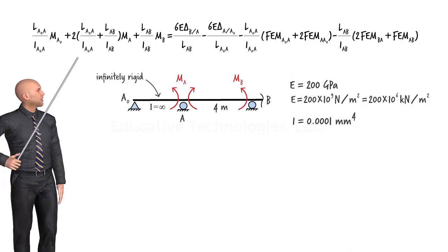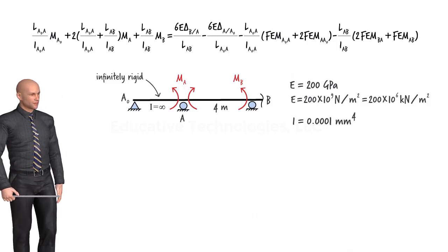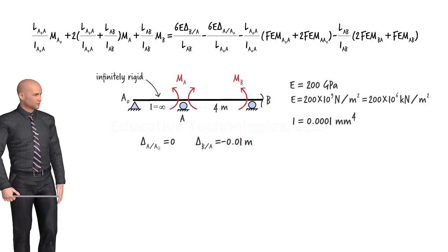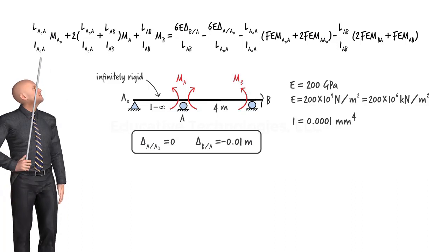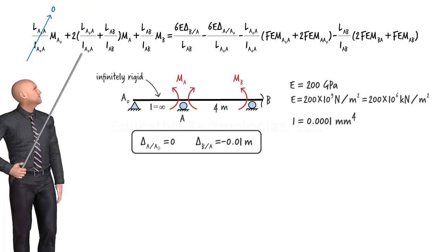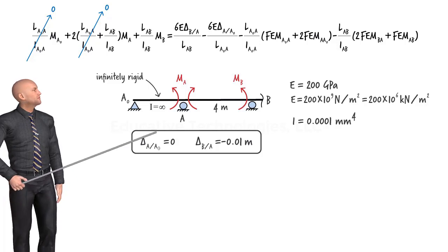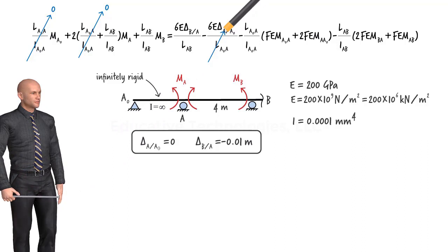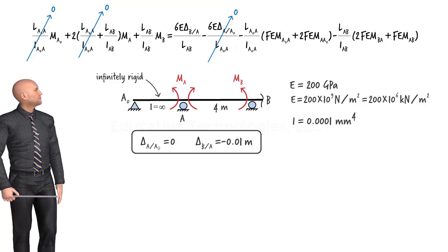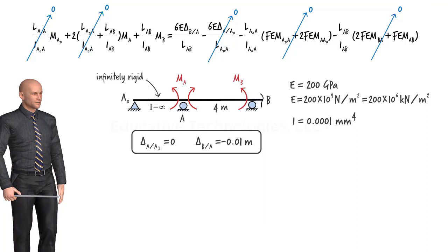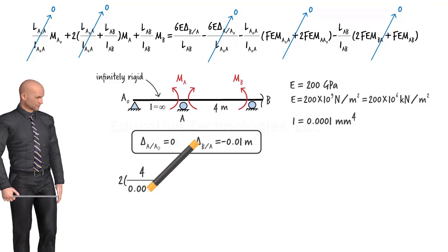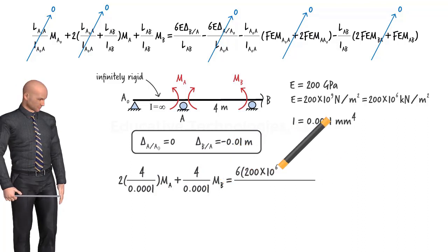For the first two spans, the relative vertical displacement for the left segment is zero, and for the right segment it is negative 0.01 meter. Since the moment of inertia for the left beam segment is infinity, certain terms vanish. Also, since neither segment is subjected to external loads, the fixed-end moment terms are zero. Knowing E, I, and delta BA, the three-moment equation simplifies to a usable form.